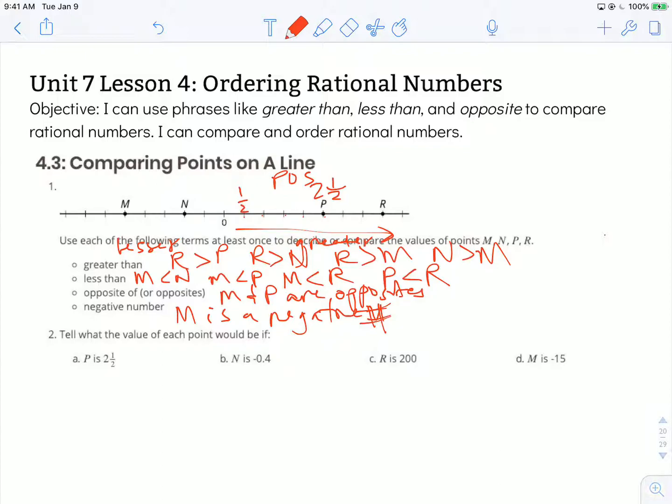So in that case this would be three, three and a half, and four. This would be negative one half, negative one, negative one and a half, negative two, negative two and a half. And I should have just known since M and P are opposites that it would be negative two and a half. So those would be my values.